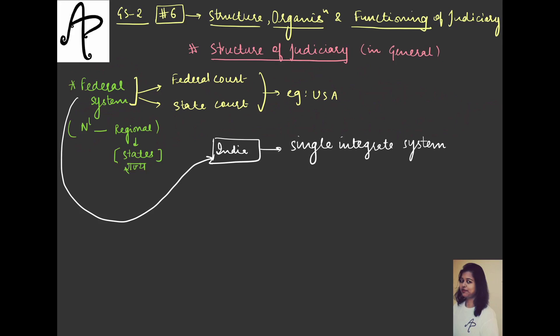For legislature and executive we have this dual system, but for judiciary we have a single integrated system in terms of the courts, despite having the federal structure. This single integrated system is for both union and states. And from where have we borrowed this structure? This is adopted from the Government of India Act, 1935.